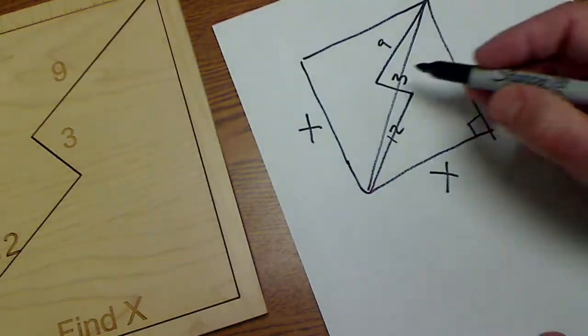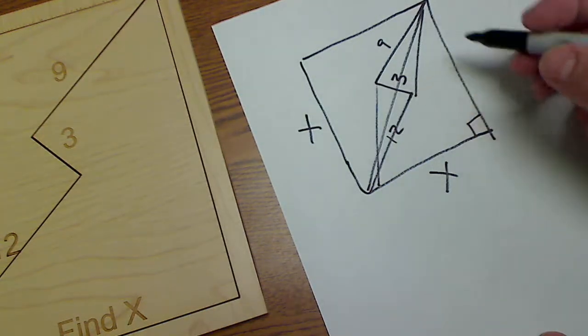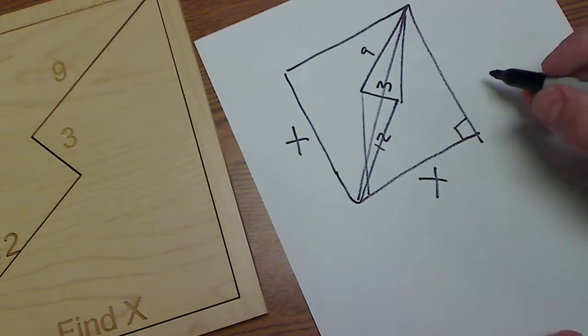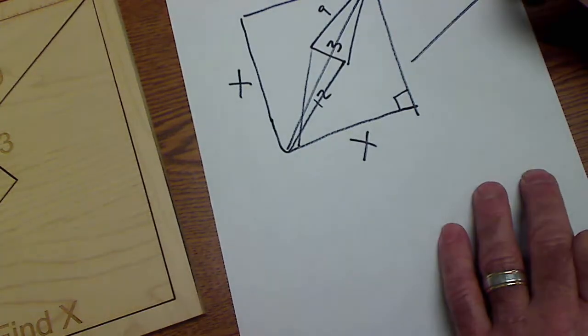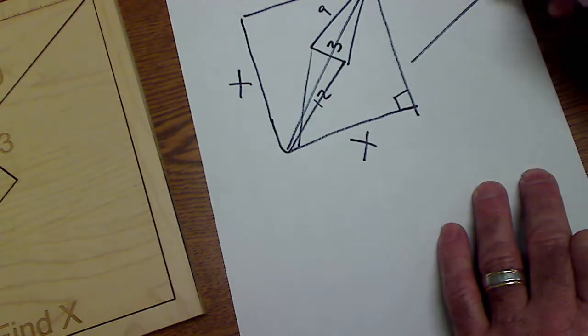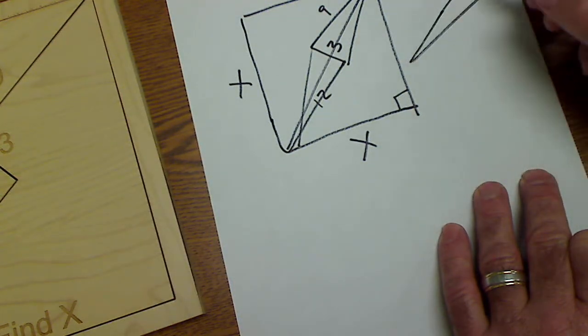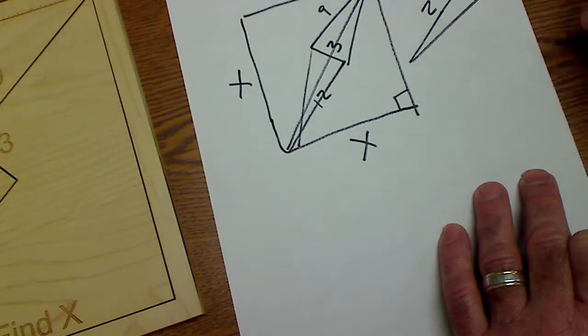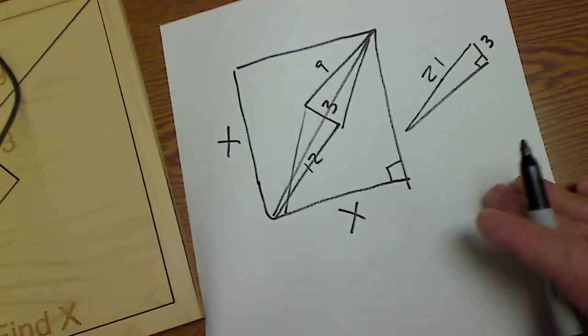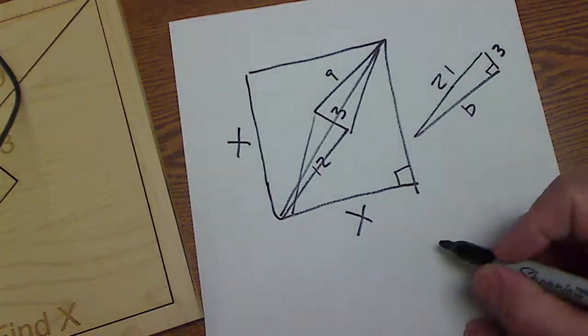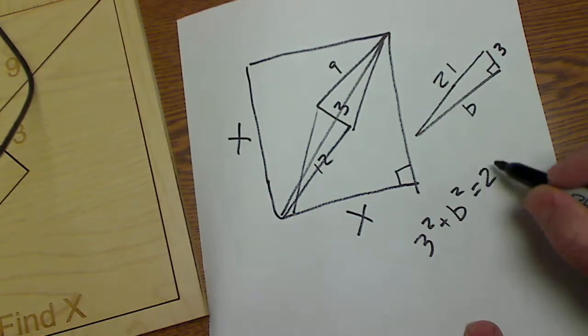So the way I could figure this out is if I take these pieces together, this is a right triangle, or it's the same thing as this right triangle here. I would have a height of 3, a hypotenuse of 9 and 12, or 21. So that would be that triangle there. So I want to find this side here, B. So I could say 3 squared plus B squared equals 21 squared.